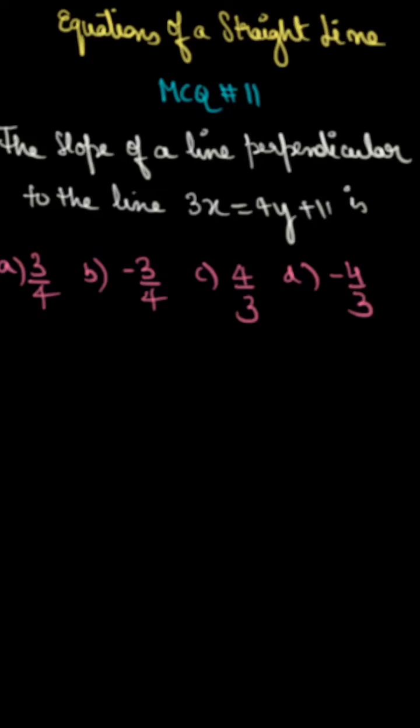The slope of a line perpendicular to the line 3x is equal to 4y plus 11. 3x equals 4y plus 11. Look at the previous MCQ, we have seen a parallel case.